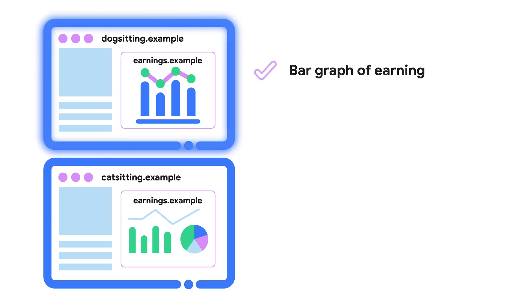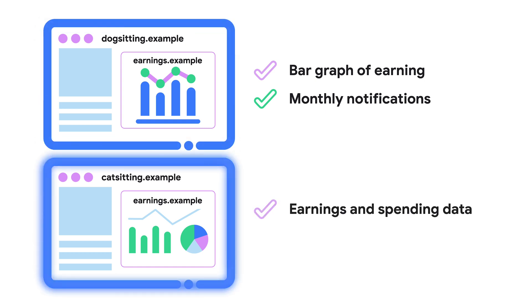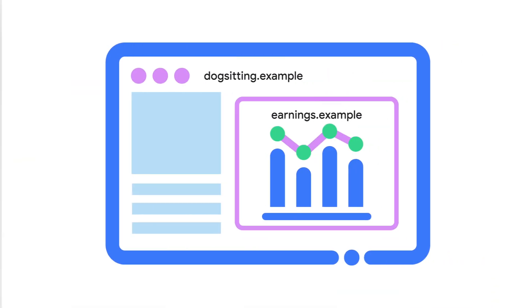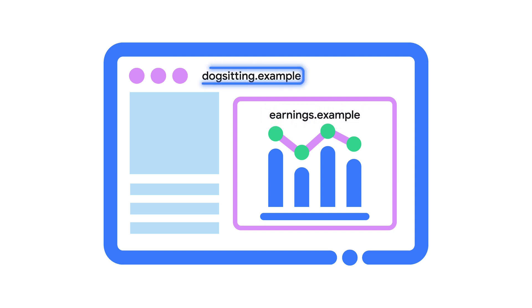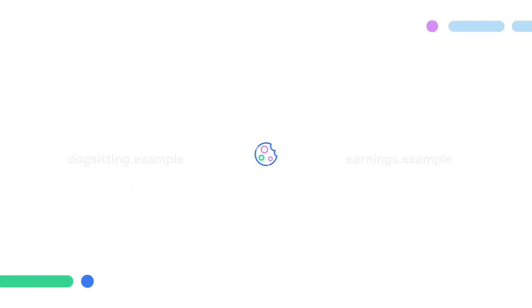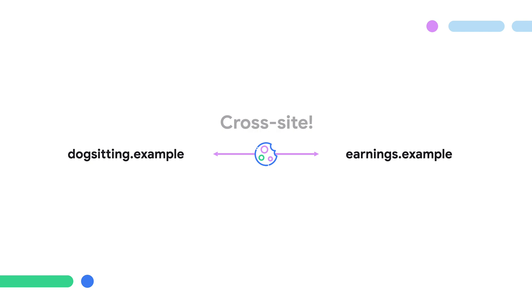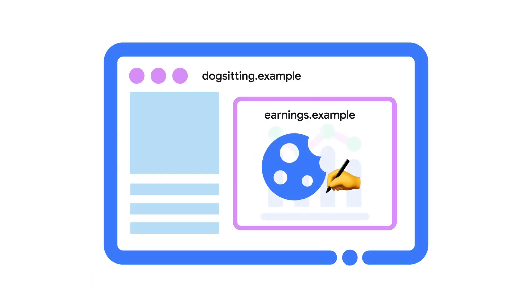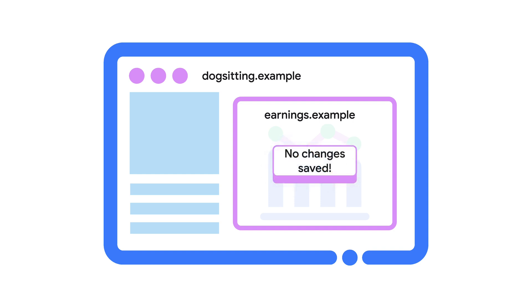Say, on dog-sitting.example, they wanted the widget to look one way, maybe get notifications less often, but on another site, they want a totally different look and notification schedule. But what happens if third-party cookies are blocked? Because the earnings.example widget is embedded on dog-sitting.example, it is considered to be in a cross-site context. When the user tries to save their preferences, earnings.example attempts to set a cookie, but that is prevented by the browser because it's a third-party cookie.